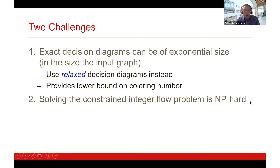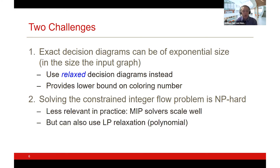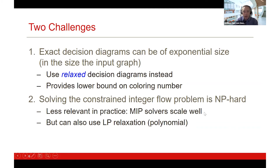Solving the integer program is NP-hard, but we don't do anything different from the original column generation approach — they also have an integer program to solve. MIP solvers scale very well. If you want a polynomial bound, you can use relaxed decision diagrams of only polynomial size and solve with LP, giving a polynomial lower bound — though I'm happy to run MIPs in practice.